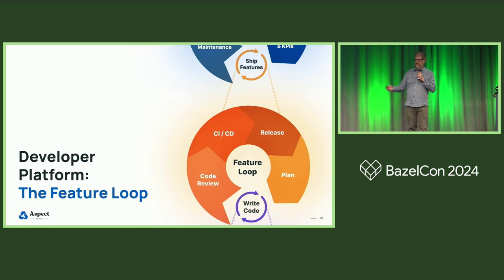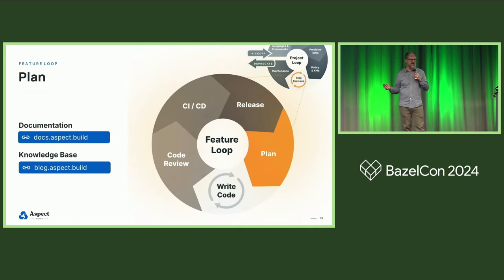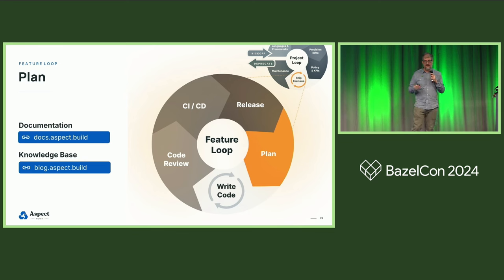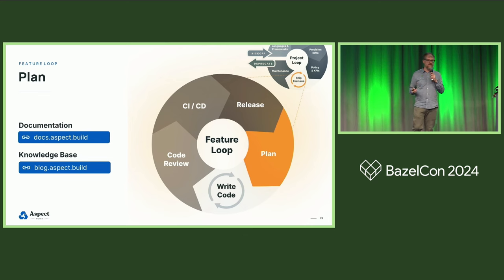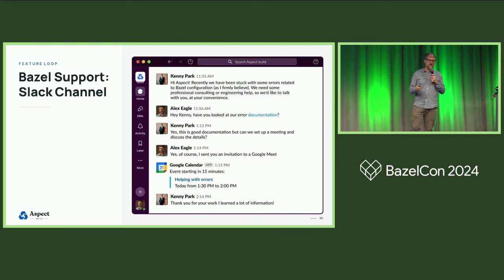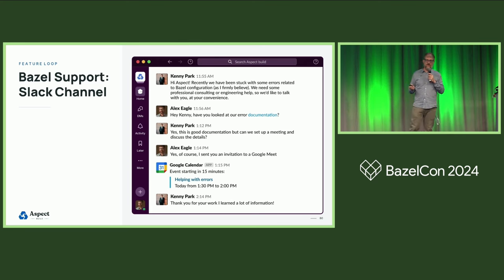Now I'll zoom in to how it is that we ship features in this feature loop. First of all, you're going to have to do some planning. You can use our documentation site for this — we've got an excellent wide-ranging set of documentation. We also have a knowledge base published on our blog where I've tried to list everything we've learned from consulting for a lot of Bazel companies. Then you'll write code, and you may need our help when you run into Bazel problems. We have a support channel where our experts can be in your Slack and keep you unblocked.